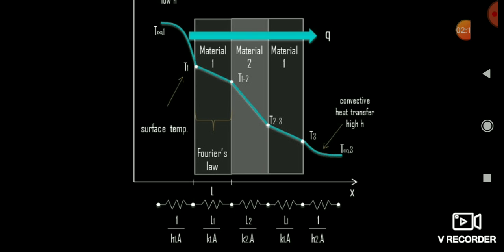In series connection, equal current passes through all resistors. Here also, the equal amount of heat Q passes through all materials — the heat passing through material 1 equals the heat passing through material 2 and through material 1 again on the other side. The heat flow is constant throughout in a series arrangement.